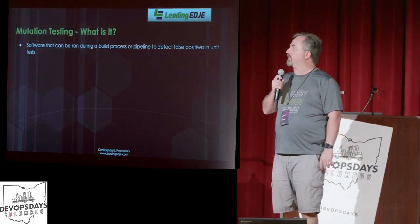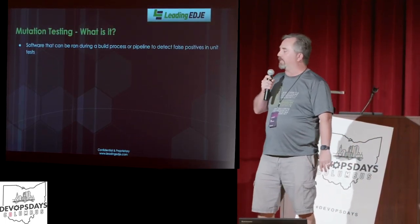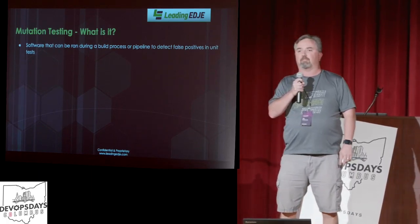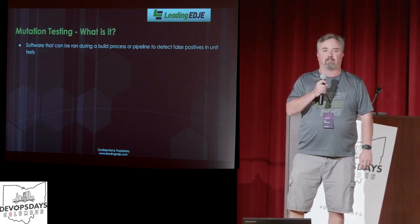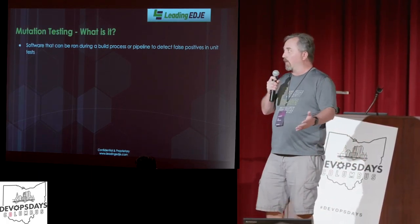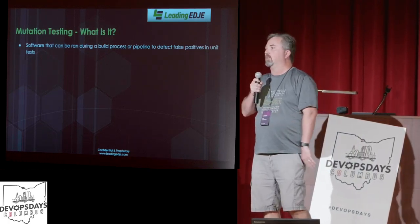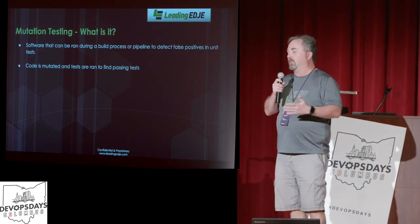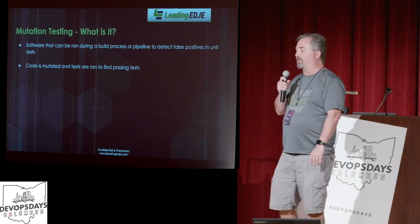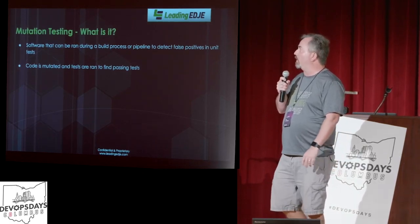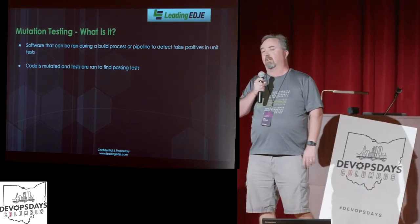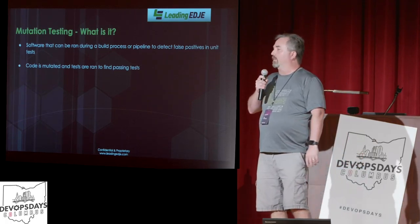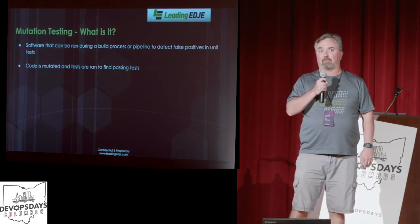So what is it? It's software that can be run during a pipeline or any sort of build phase to detect any false positives in your unit tests. Just like when you run your unit tests, you could then also run mutation tests to find out if you have any false positives. How does it do that? Your code itself is mutated, and then your unit tests are run again to find any passing tests.